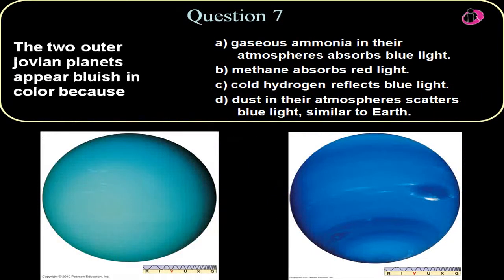Question seven. The two outer Jovian planets appear bluish in color because, and here's pictures of the two outer Jovian planets. You have Uranus on the left here and Neptune on the right. They're using the Voyager picture of Uranus. The more recent pictures of Uranus will show more of a band structure. But in either case, they're kind of bluish green in color.